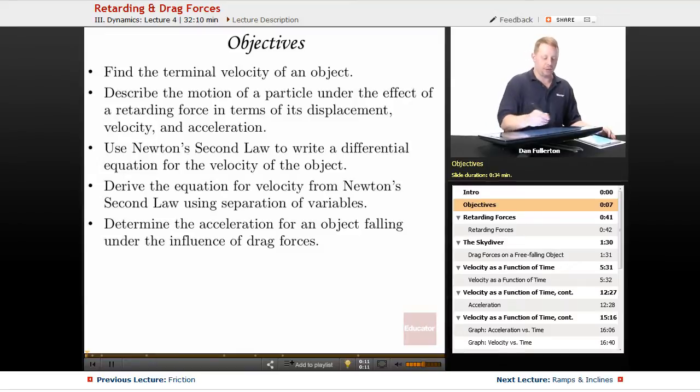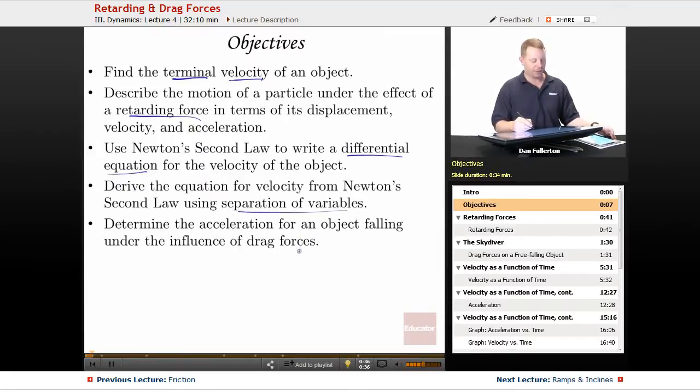So our objectives are going to be to find the terminal velocity of an object, to describe the motion of a particle under the effect of a retarding or drag force in terms of its displacement, velocity, and acceleration, use Newton's second law to write a differential equation for the velocity of the object, derive the equation for velocity from Newton's second law using separation of variables, and determine the acceleration for an object falling under the influence of drag forces.